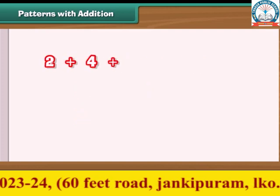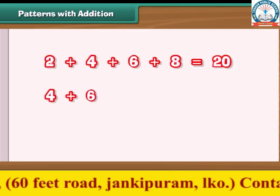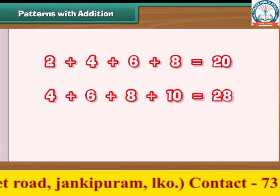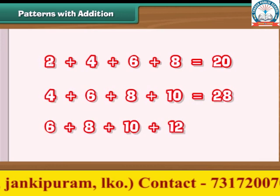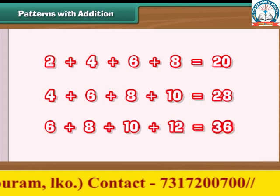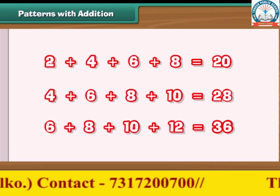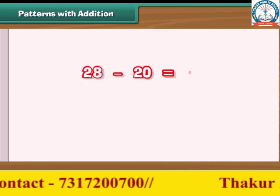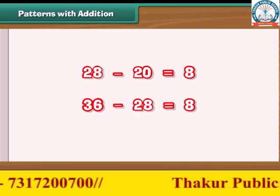Let us look at another addition pattern. 2 plus 4 plus 6 plus 8 is 20; 4 plus 6 plus 8 plus 10 is 28; 6 plus 8 plus 10 plus 12 is 36. The difference between any two adjacent sums is 8: 28 minus 20 is 8, and 36 minus 28 is 8.